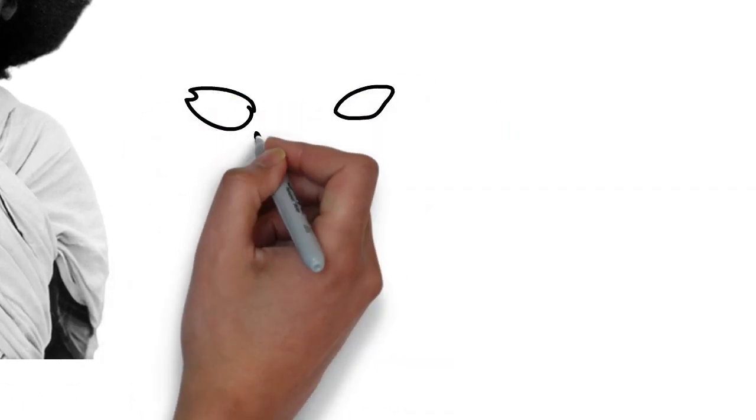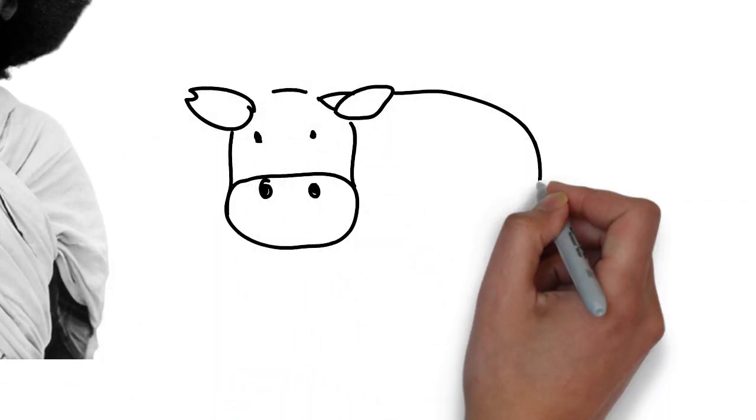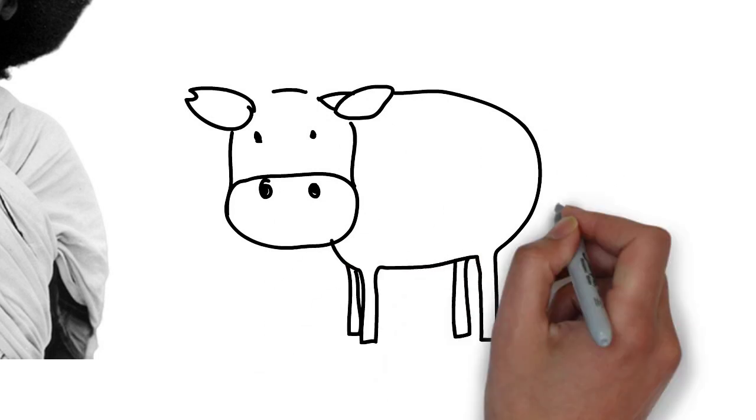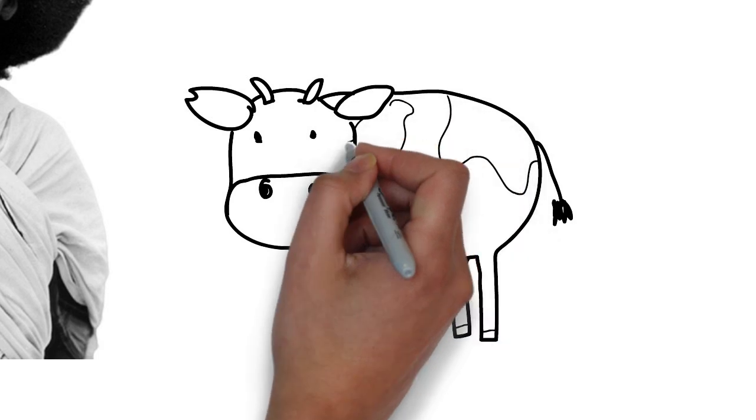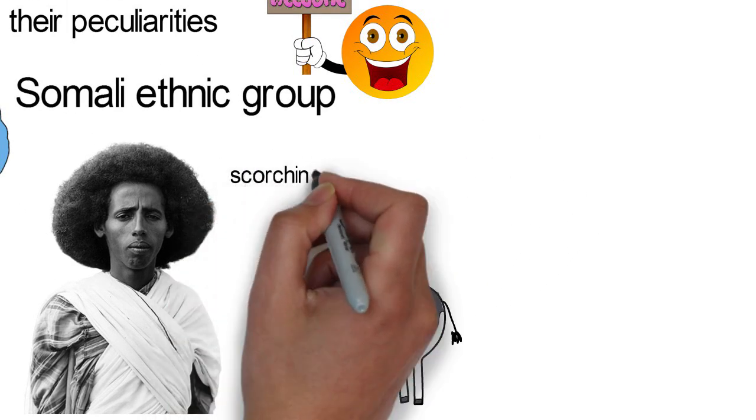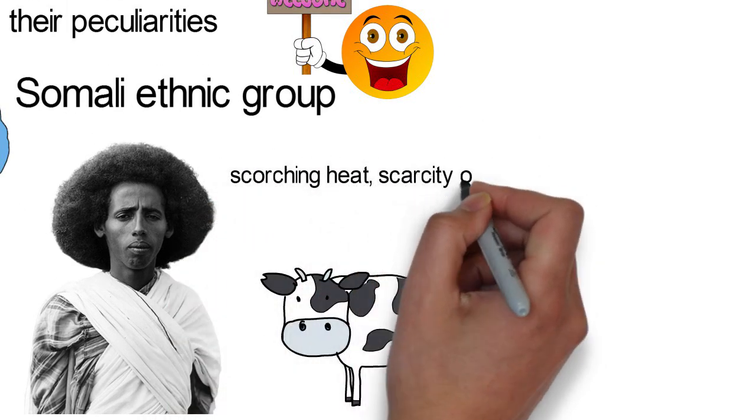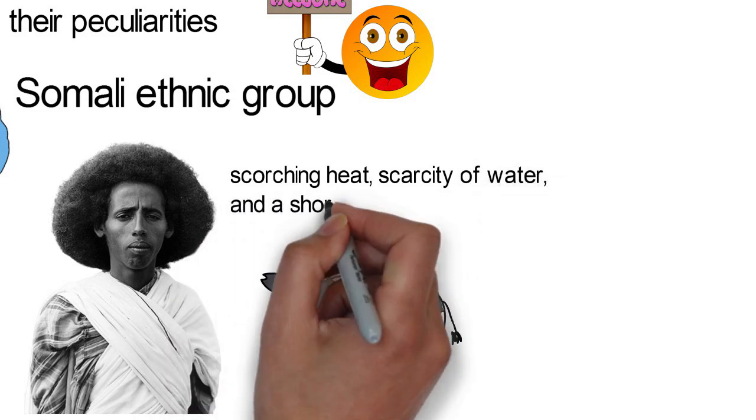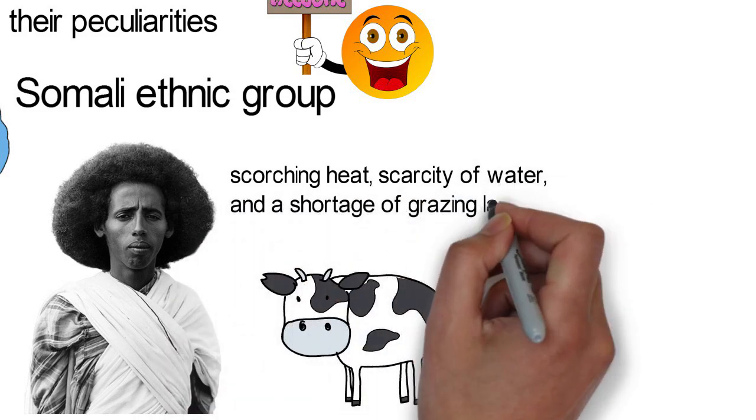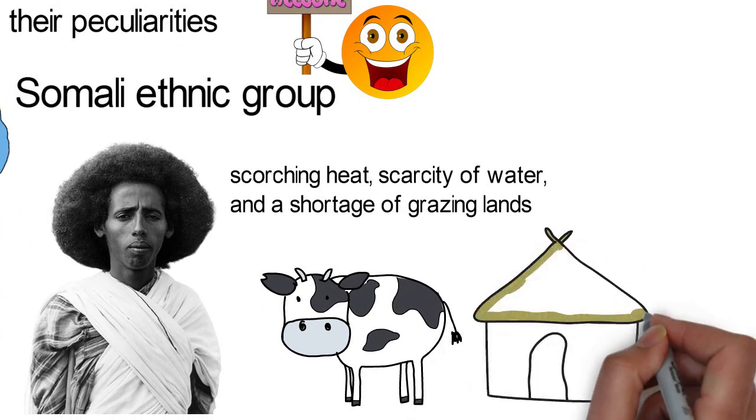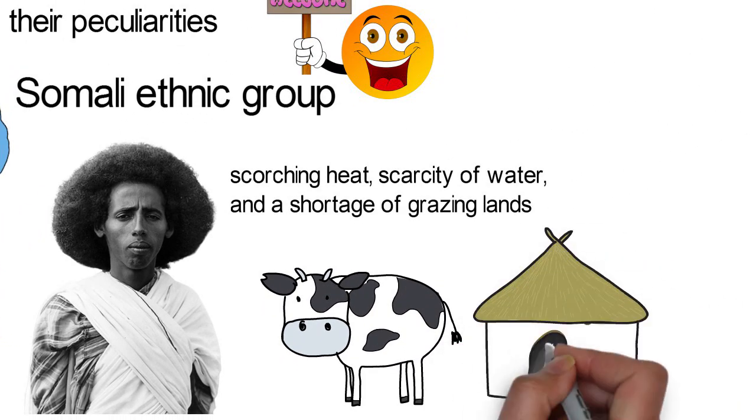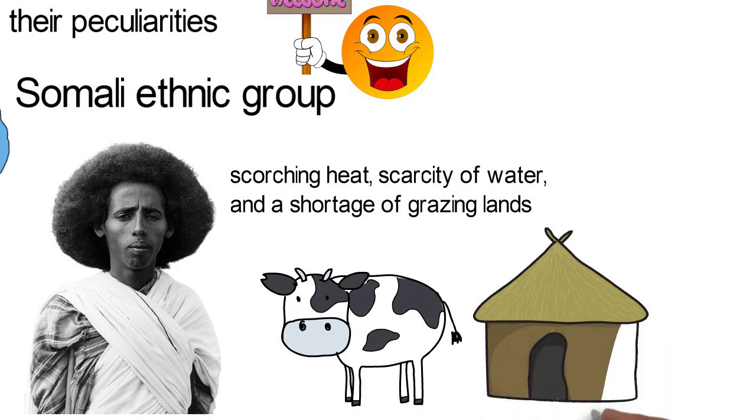Although only a very small fraction of the land is suitable for it, about one-fourth of the Somalis in Djibouti are nomadic shepherds, grazing sheep, goats and cattle. This is a rather difficult life for these nomads given the scorching heat, scarcity of water and a shortage of grazing lands. The nomads live in branch-framed portable huts covered with woven mats. Their houses are easily dismantled and moved from place to place as they search for grazing lands.